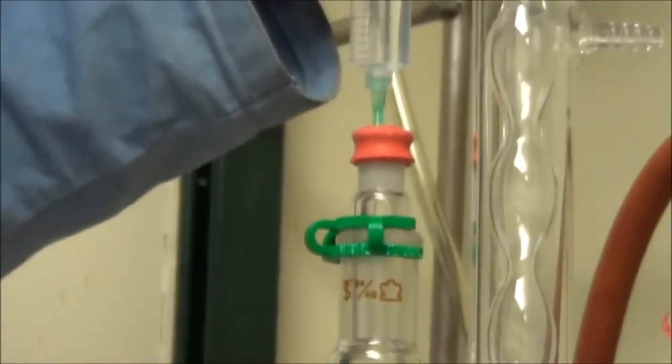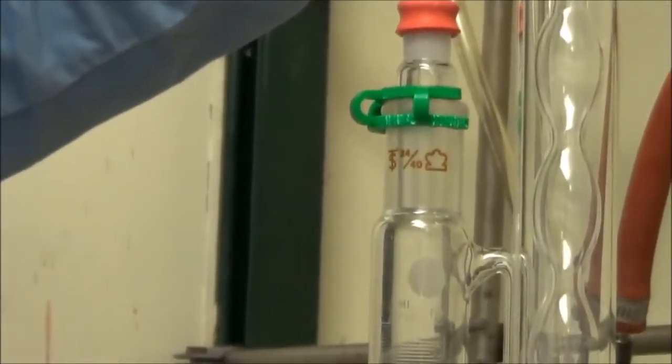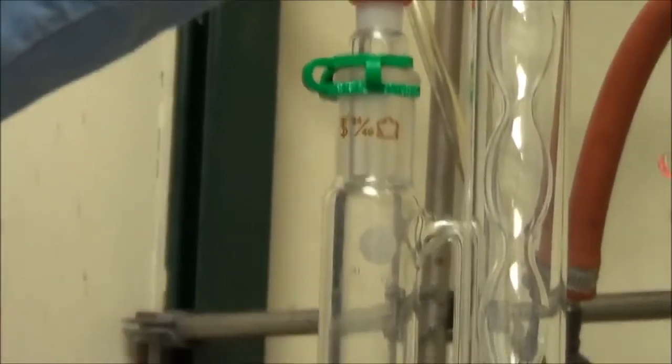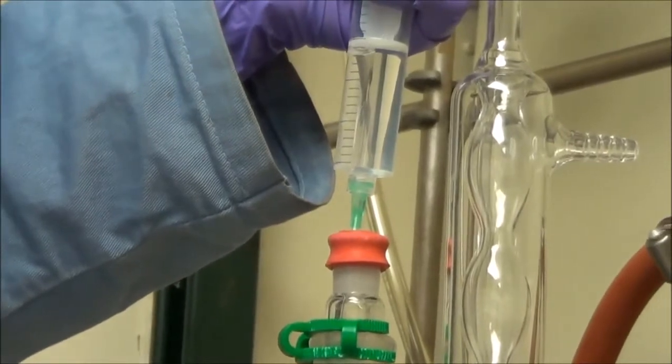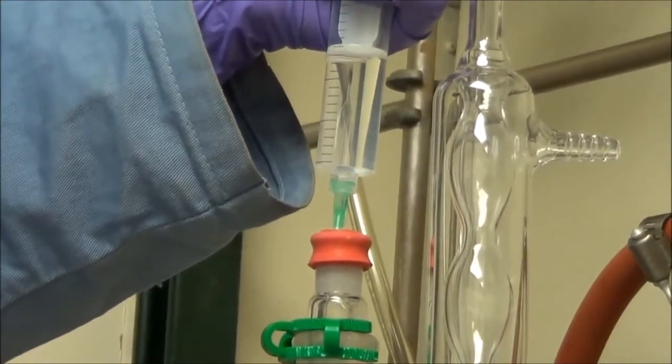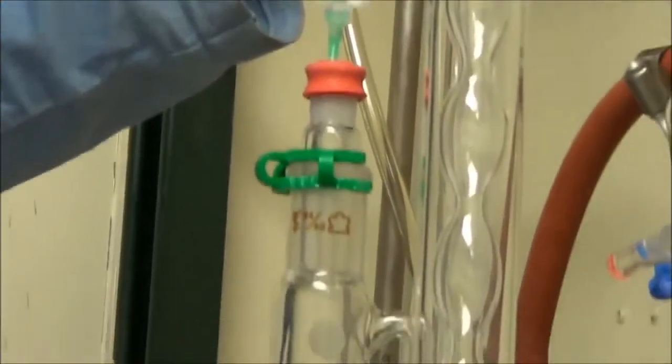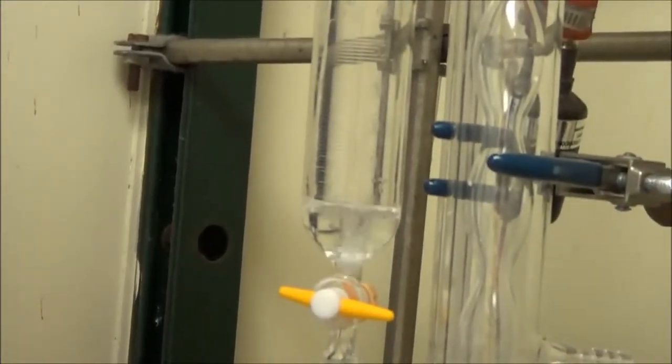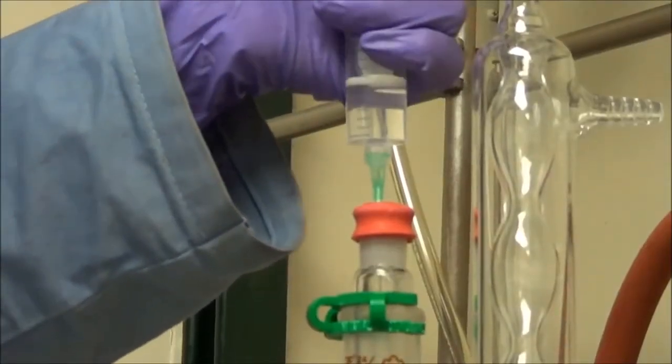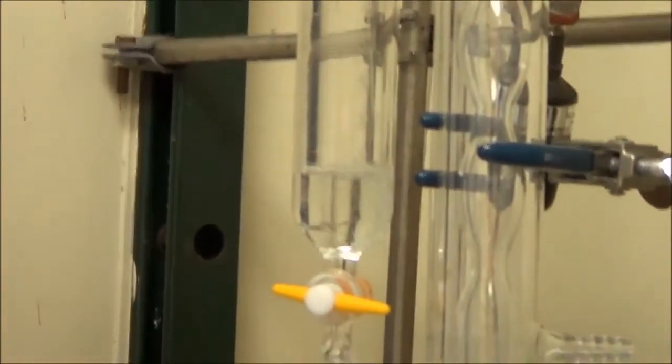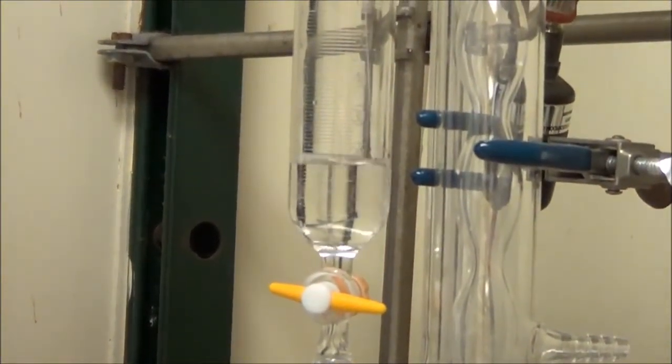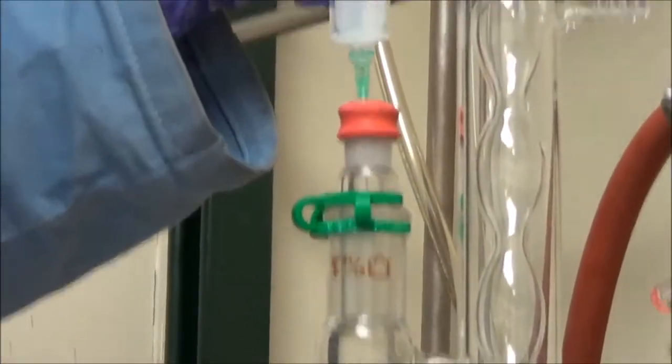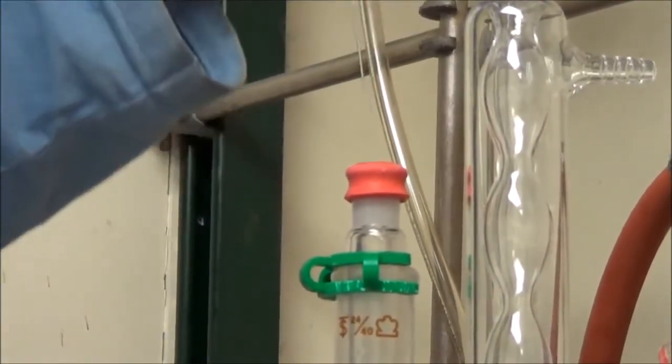The next step is to add the bromotetradecane, and again, we're going to do that through the septum in the addition funnel. This material is like molasses, so it's actually slightly easier to get it to drip in slowly, but it takes a little bit longer to inject into the addition funnel. We're going to add this in several portions, because we're actually adding a lot of material at once, so we just fill up the addition funnel, drip it in, and then recharge it.